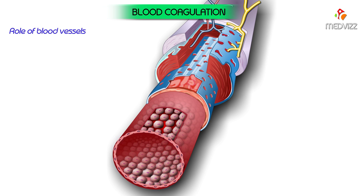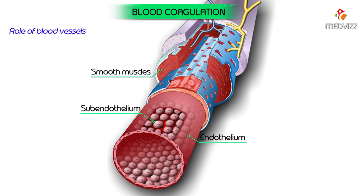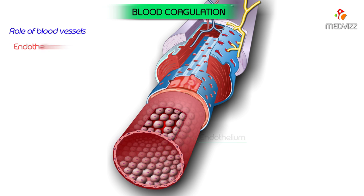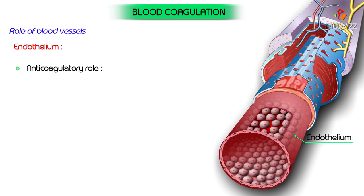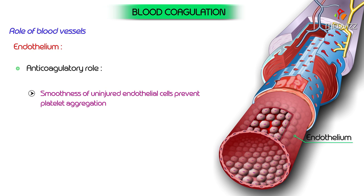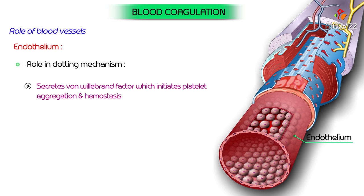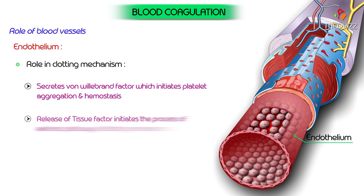Role of blood vessels: endothelium plays both anticoagulatory and coagulatory roles. Anticoagulatory roles: smoothness of uninjured endothelial cells prevents platelet aggregation; endothelial cells produce prostacyclin (PGI2), which opposes platelet aggregation. Coagulatory roles: endothelium secretes von Willebrand factor, which initiates platelet aggregation and hemostasis; tissue factor is released by endothelial cells following trauma, initiating the extrinsic pathway; plasminogen activator, which activates plasminogen to plasmin, is also released by endothelial cells.